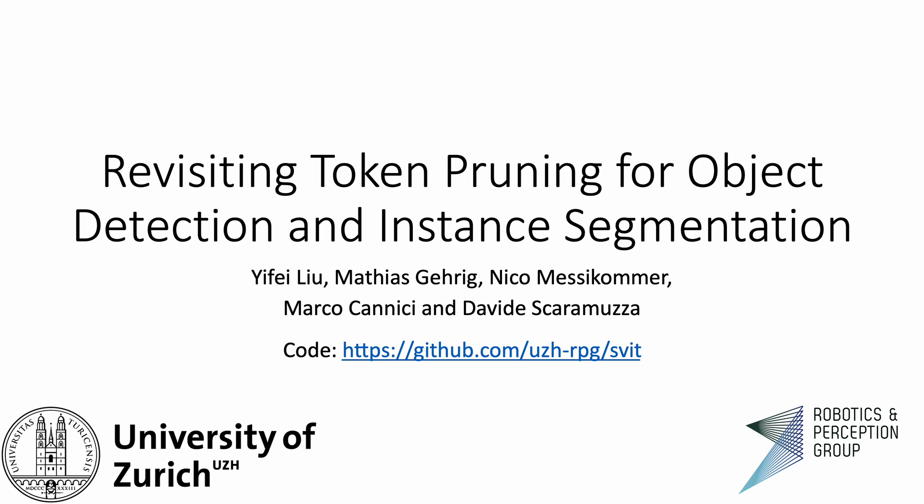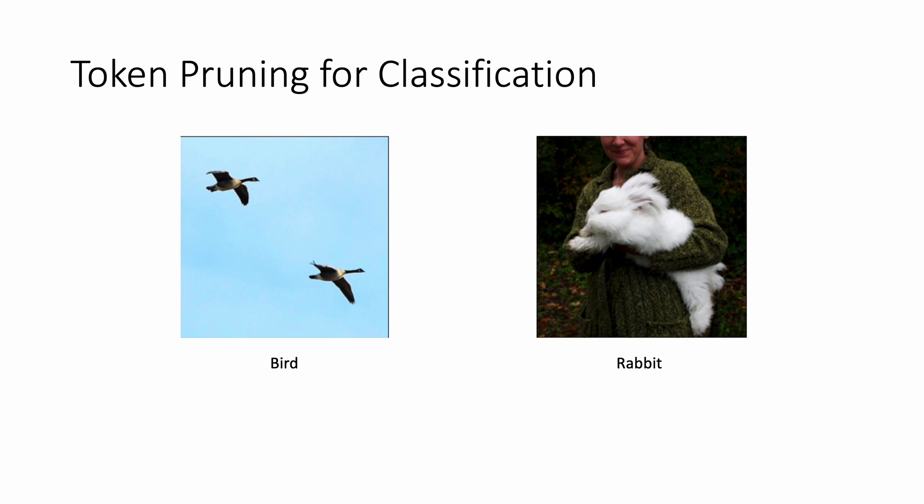In this work, we revisit token pruning for vision transformers and introduce a selective vision transformer for object detection and instance segmentation.